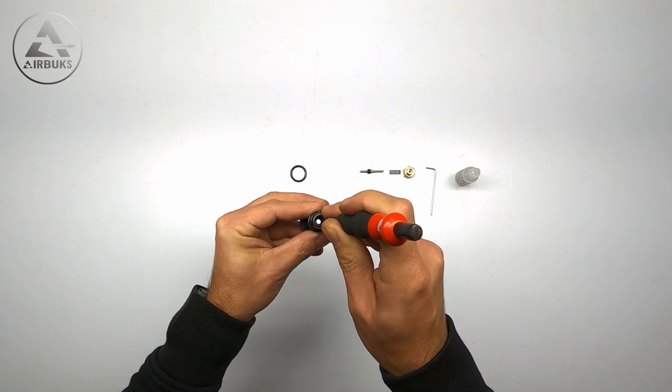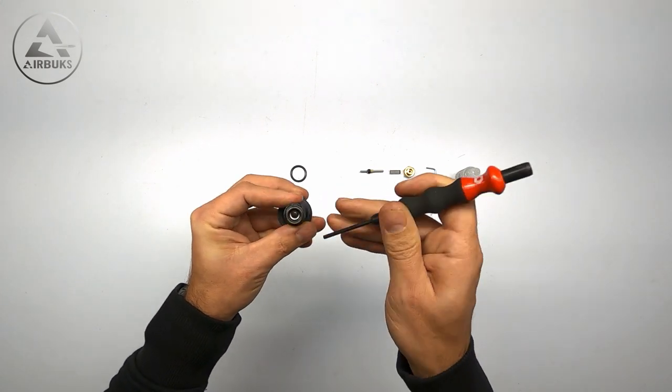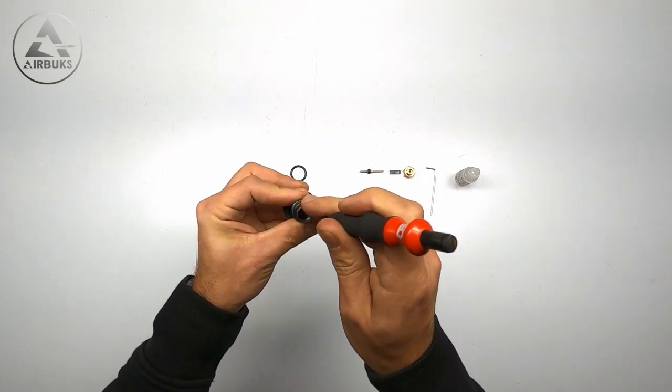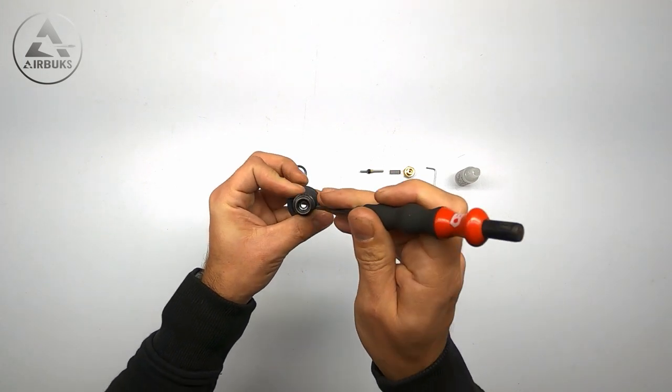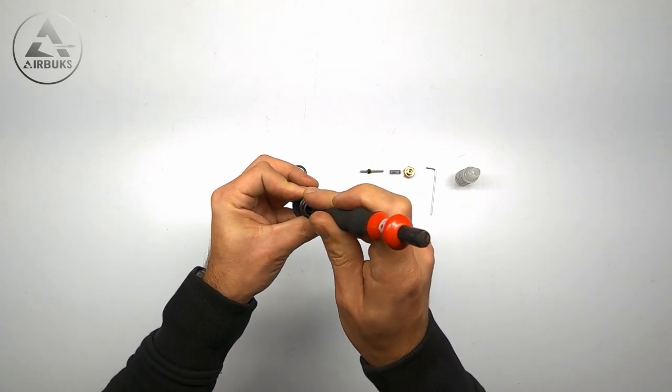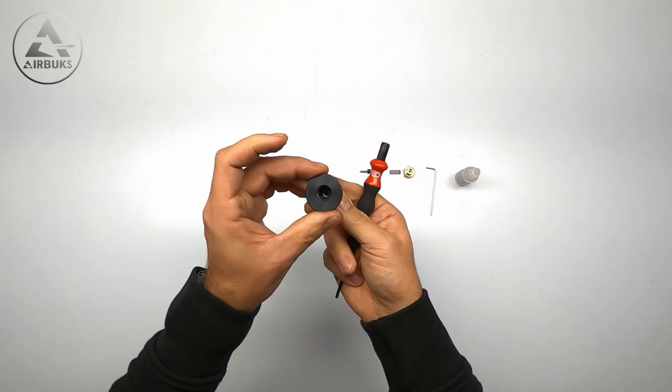Make sure you're not damaging the conical part where the valve seat has to sit. Because if you scratch this, then the seat won't seal properly.